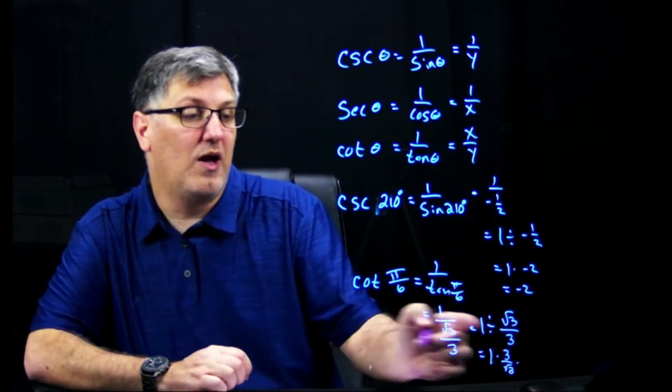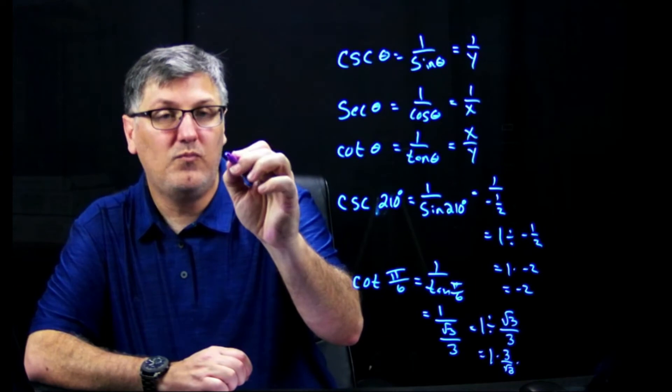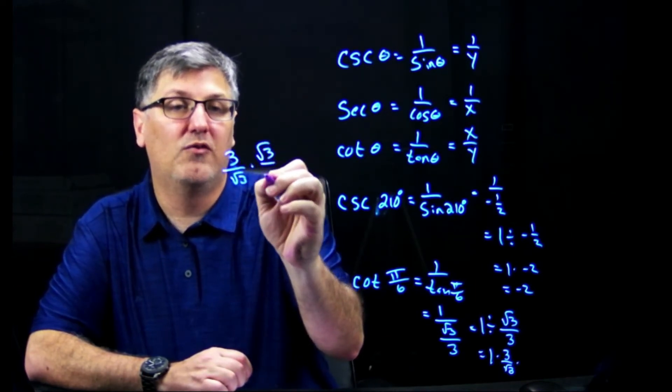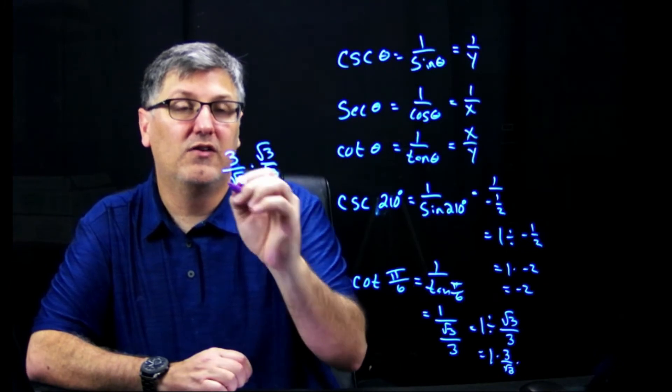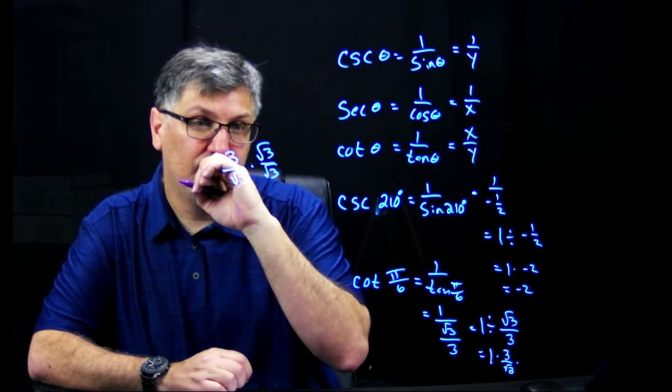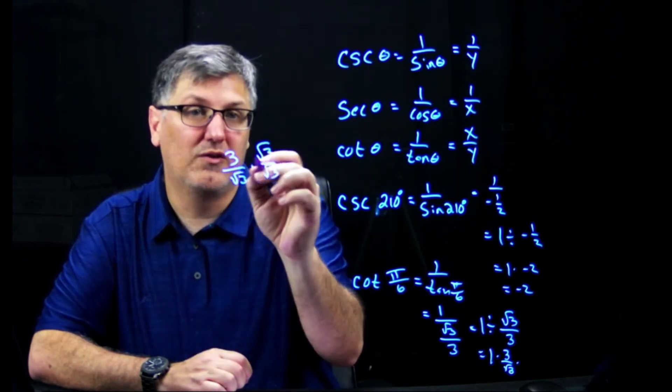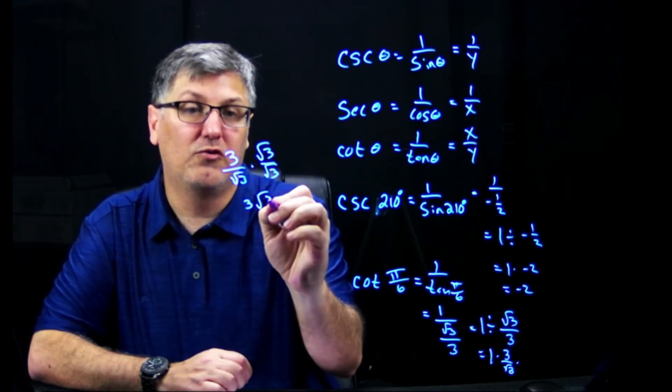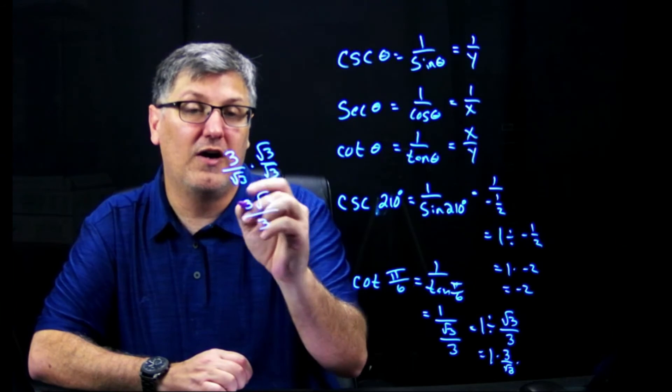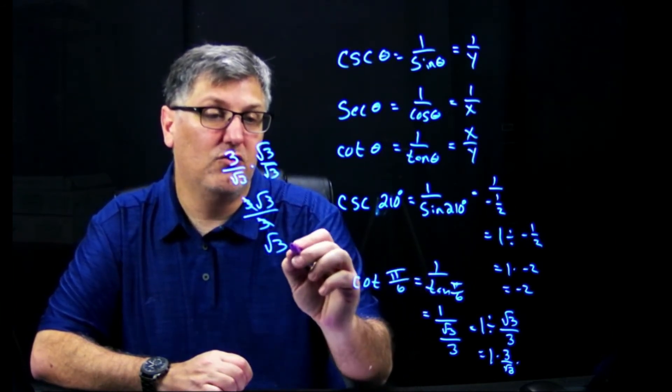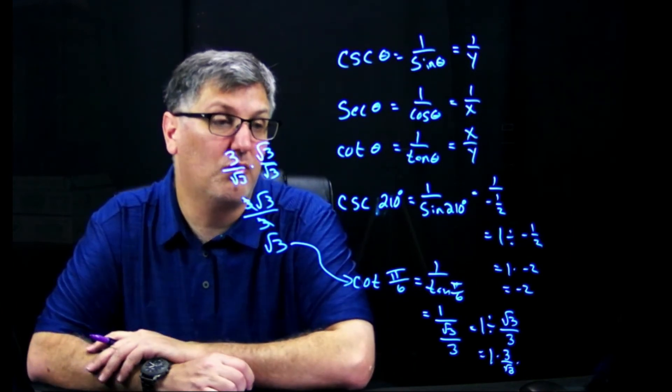I'm going to rationalize this phenomenon, I'm going to do my work up here. 3 over the square root of 3 times the square root of 3 over the square root of 3. This gives me, what did I do wrong? Nothing. 3 square root of 3 over 3 is 9. My 3s are canceled, square root of 3. So the answer to cotangent of pi over 6 is square root of 3.